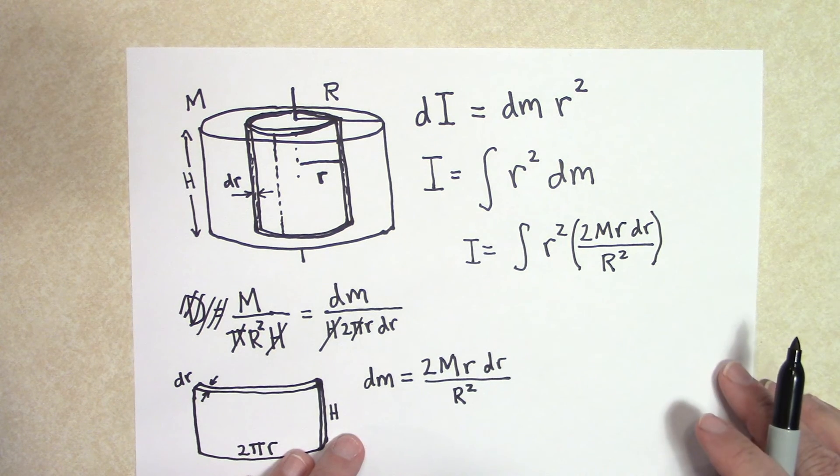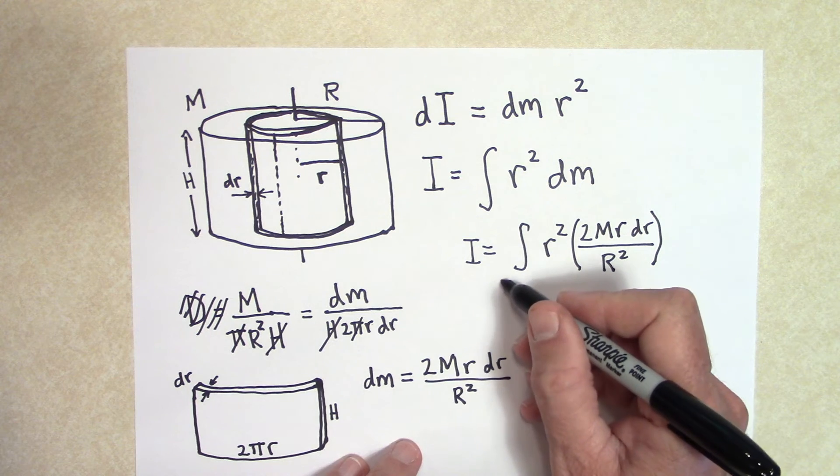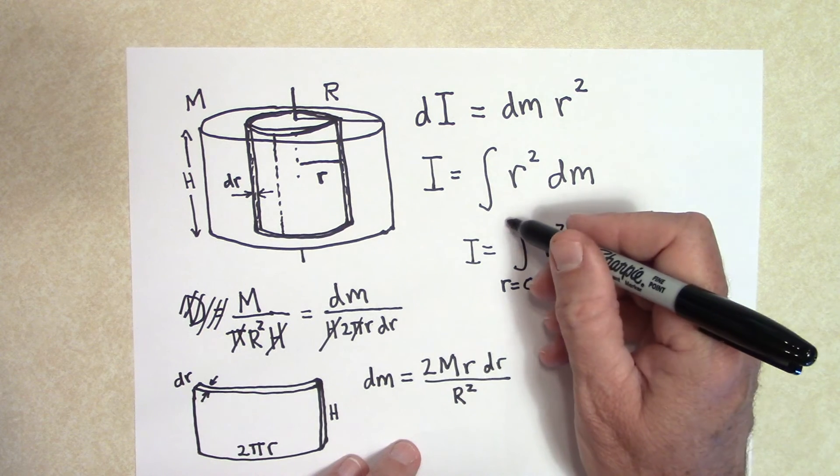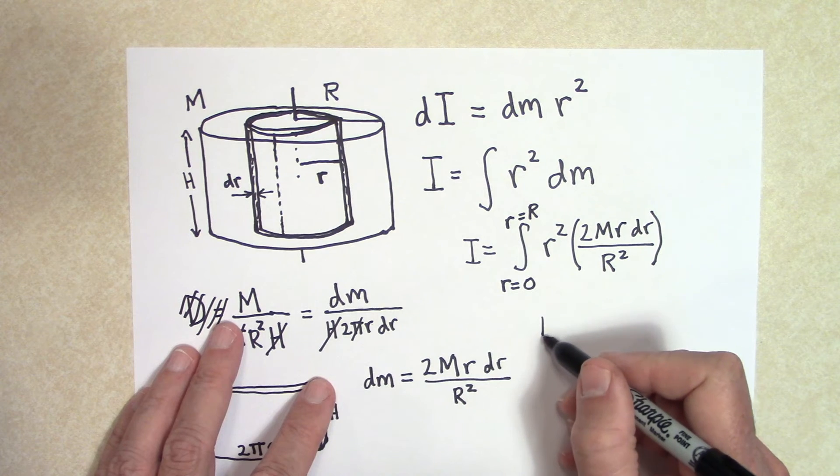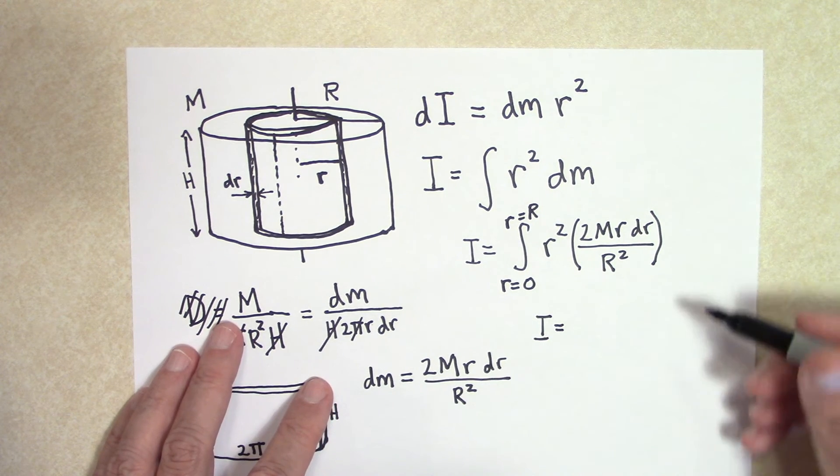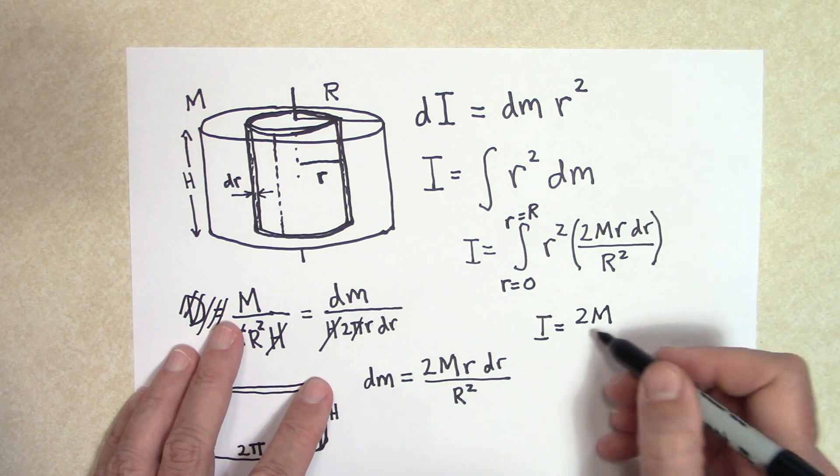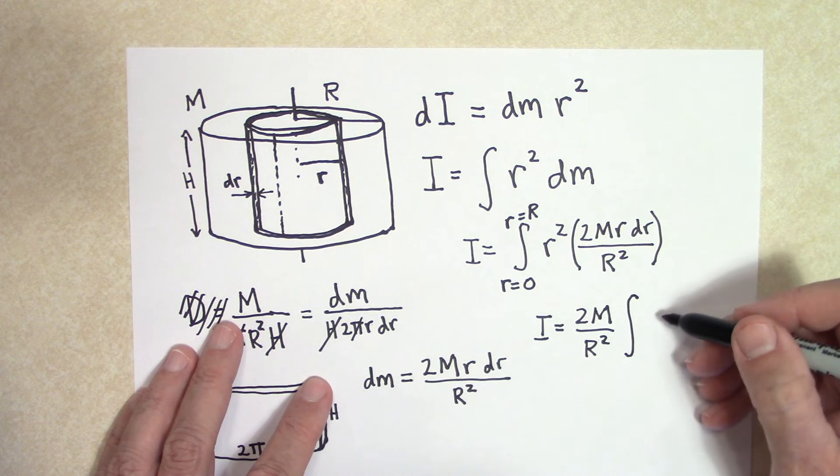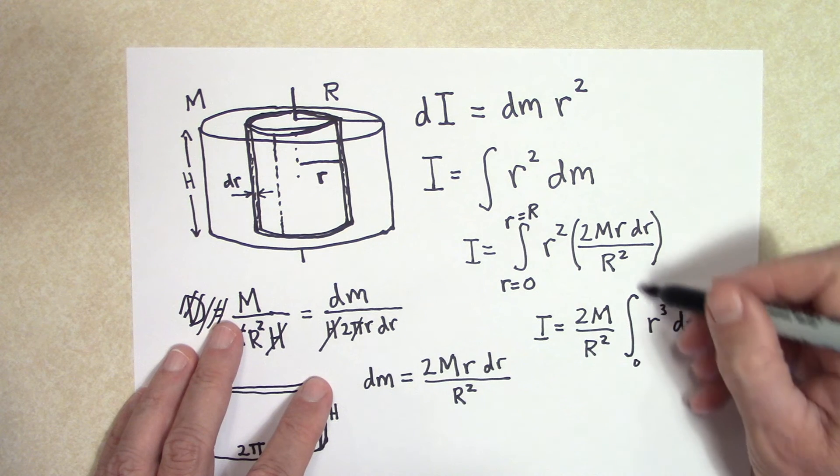We have to tell the integral when to start adding and when to stop adding. And that's got to be in terms of r because my differential is dr. So I'm going to say start adding these rotational inertias up at zero when r equals zero. And don't stop adding till you get to r equals capital R. Everything else is ready to go. We just got to let's pull out all the constants out of this integral. So I is equal to, now pulling out all the constants, I got 2m over r squared. And then I got this integral is going to be r cubed dr from zero to capital R.